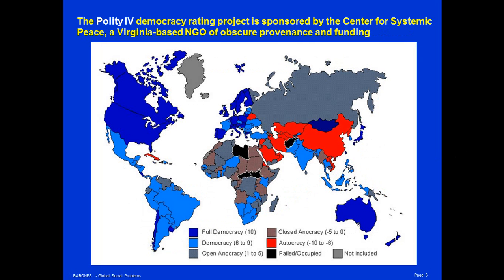The Polity4 project is sponsored by the Center for Systemic Peace, which is a non-government organization based in northern Virginia of obscure provenance and funding. It was founded by the political scientist Ted Robert Gurr, and its current director is listed on its website. But there is virtually no information on the website or in its publications about the people involved, the funding it receives, and how it does the work it does. The Polity4 group is, to be fair, well-respected within the political science community, but that doesn't mean that outside a narrow community of experts we should trust what it does.